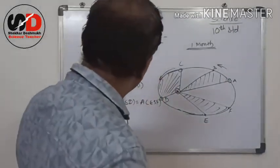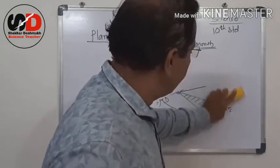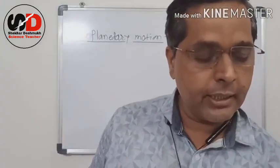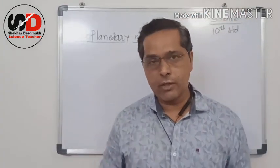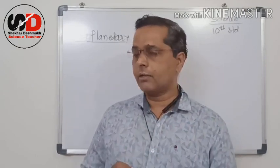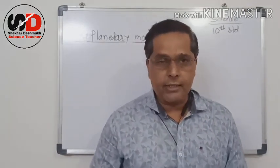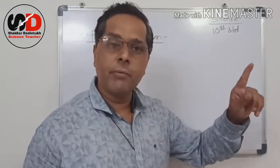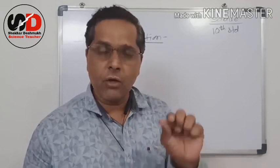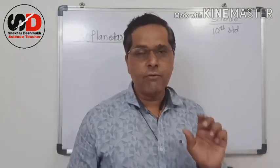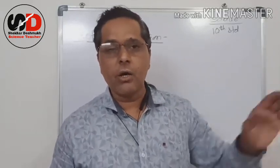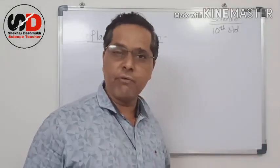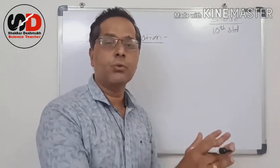From Kepler's first law we understood that a planet's orbit is elliptical instead of circular. From Kepler's second law we can see that the speed of the planet is very slow whenever it is far from the Sun, and its speed increases — it moves very fast — whenever it is closer to the Sun.